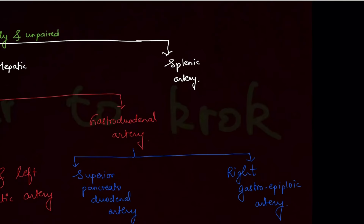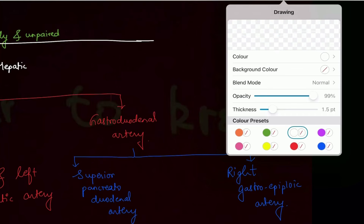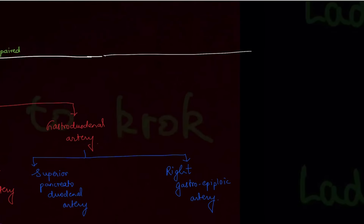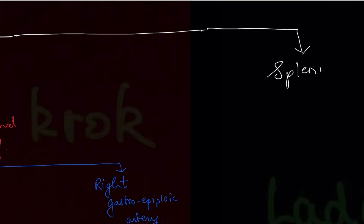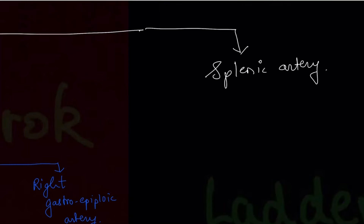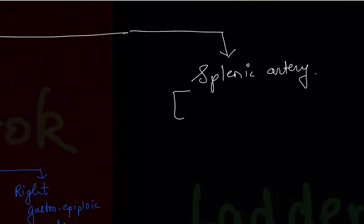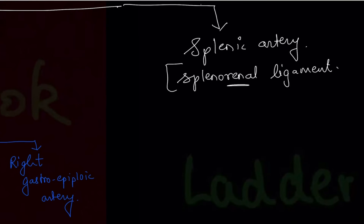The next major direct branch from the celiac trunk is the splenic artery. The splenic artery, as the name tells, directly supplies the spleen. One important thing to know is that the splenic artery runs in the splenorenal ligament — the ligament connecting the spleen and the kidney — and the splenic artery runs within that ligament.